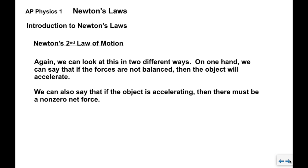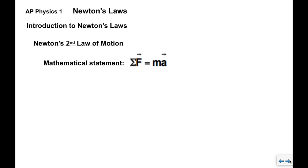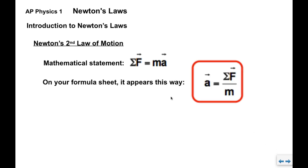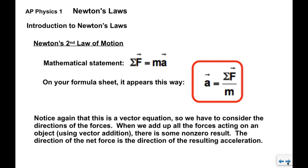Once again, we can look at it two different ways. We could say that if we know the forces are unbalanced, the object will accelerate. We can also say that if the object is accelerating, therefore the forces are unbalanced and there must be a non-zero net force acting on the object. Our mathematical version: ΣF = ma. Again, this might bring to mind kilograms times meters per second squared, which is where the units come from. And again, on your formula sheet, it appears this way—this red box means it'll be on your formula sheet. a = ΣF/m, same formula, just divide both sides by m.